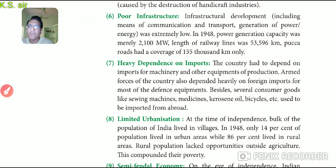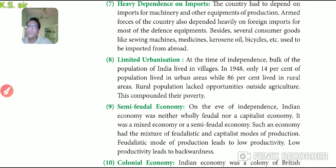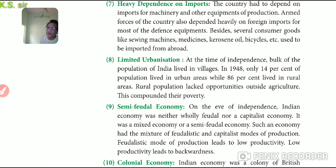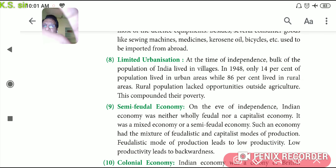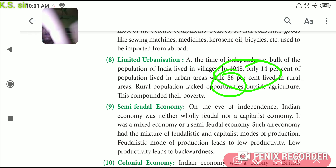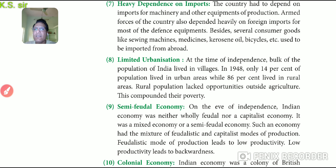The eighth feature was limited urbanization. Most of India was rural — urban centers were very few and underdeveloped. At the time of independence, the bulk of India's population lived in villages. In 1947–48, only 14% of the population lived in urban areas, meaning the rest of India lived in villages. This is an important data point, though cities like Mumbai did develop, they contained only that 14% urban population.